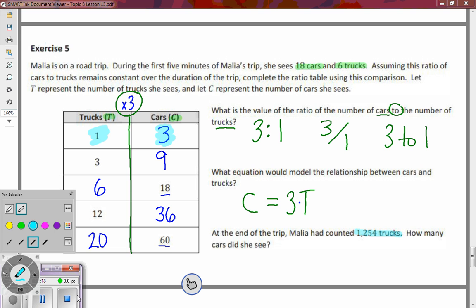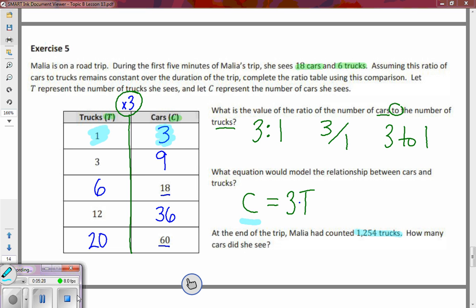How many cars did she see? Well, right here has a formula that says in order to get cars, which we let stand for the letter C, all we had to do is do three times as many trucks.